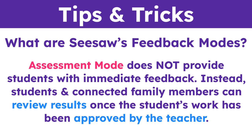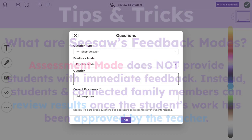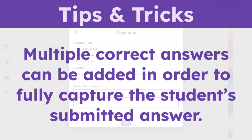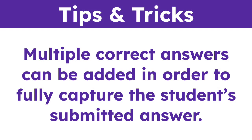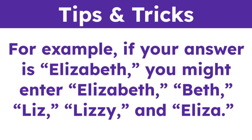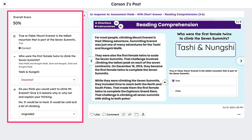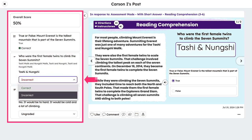Instead, students and connected family members can review results once the student work has been approved by the teacher. Next, enter your question and any correct responses. Multiple correct answers can be added in order to fully capture the student's submitted answer — for example, if your answer is Elizabeth, you might enter Elizabeth, Beth, Liz, Lizzie, and Eliza. Once the student submits their assessment, Seesaw will auto-grade and aggregate the data in a report for you to review. As the teacher, you will have the option of overriding the auto-graded responses if necessary.